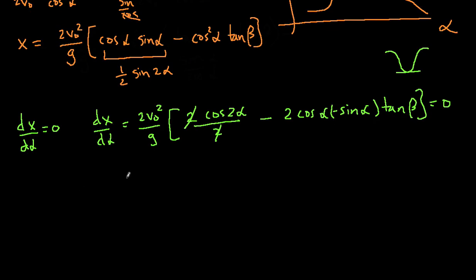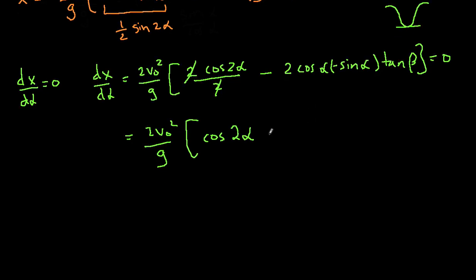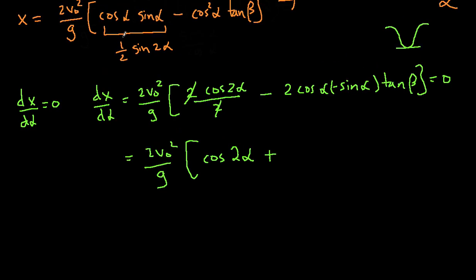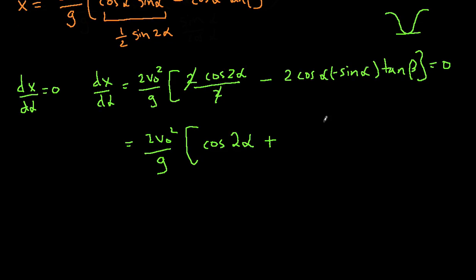So let's continue on. So that's equal to 2v naught squared over g cosine of 2 alpha plus, this is cosine alpha sine alpha. Well, we just converted that in the previous problem to sine 2 alpha. So quite neat, we get sine 2 alpha here. So 2 times cosine alpha sine alpha is sine 2 alpha. And then that's times tangent beta. And we're going to set that equal to zero.